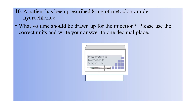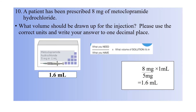Question ten: a patient has been prescribed 8 mg of metoclopramide hydrochloride. What volume should be drawn up for the injection? Please use the correct units and write your answer to one decimal place. The answer is 1.6 mL. The prescription is 8 mg and you have a metoclopramide hydrochloride ampoule of 5 mg in 1 mL. Applying the formula: 8 divided by 5, multiplied by 1 mL, gives 1.6 mL.